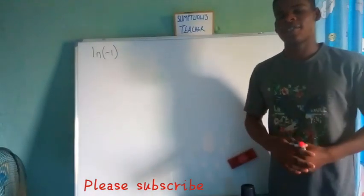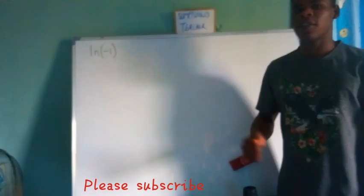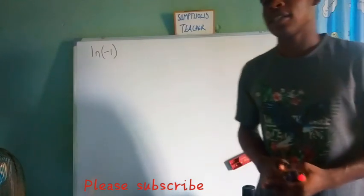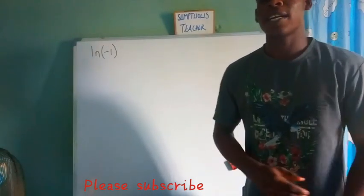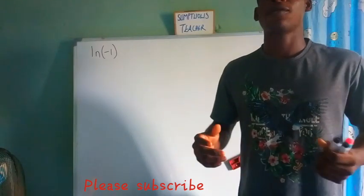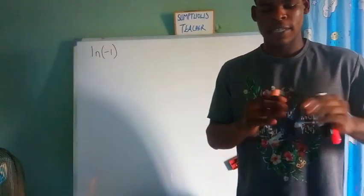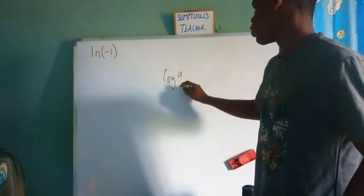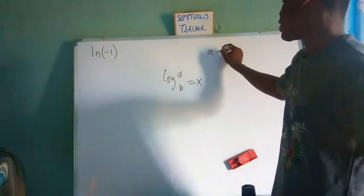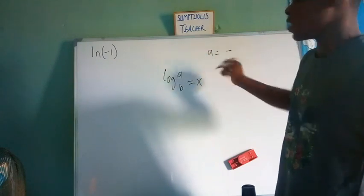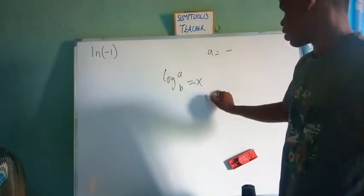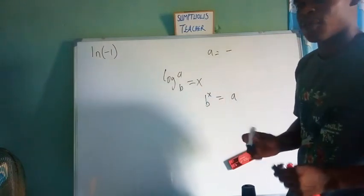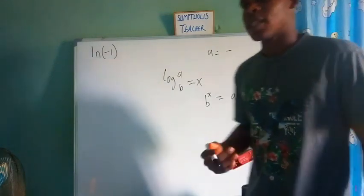Hello and welcome to Sumptuous Teachers channel. In today's video we'll be treating the natural logarithm of negative one. On the set of real numbers, the logarithm of a negative number doesn't exist. If we have log of a to base b equal to x, where a is negative, there is no such x — it's not possible on the set of real numbers.